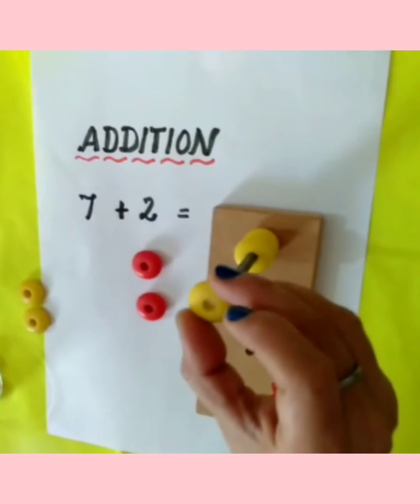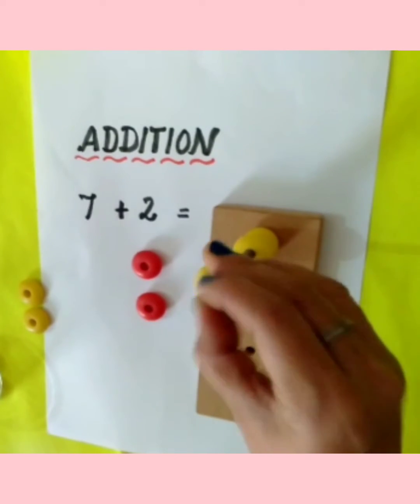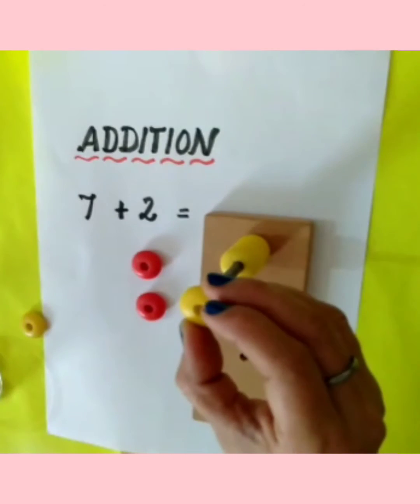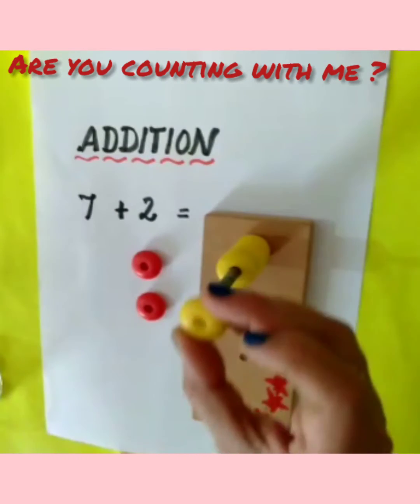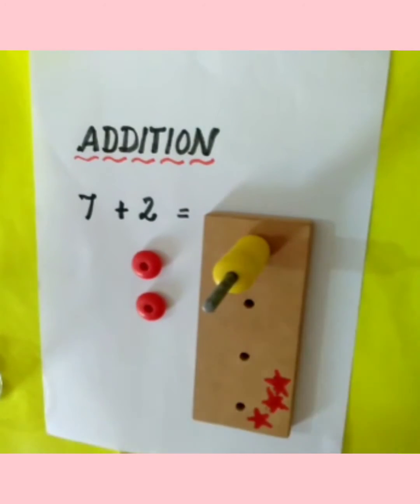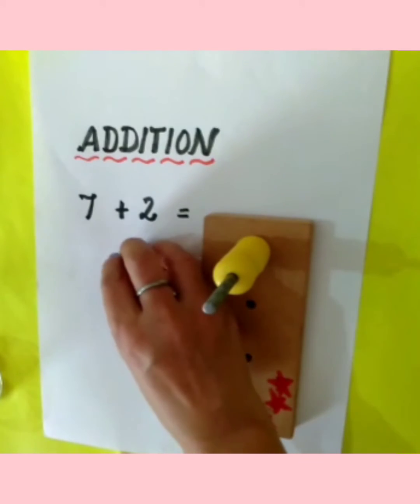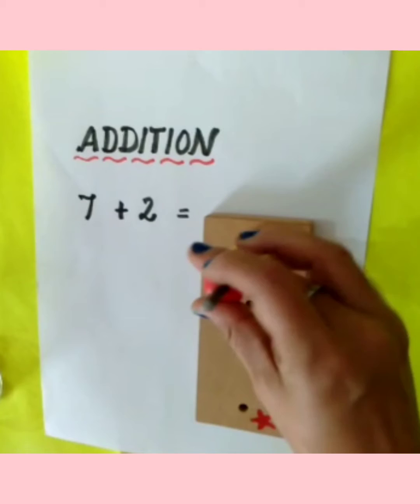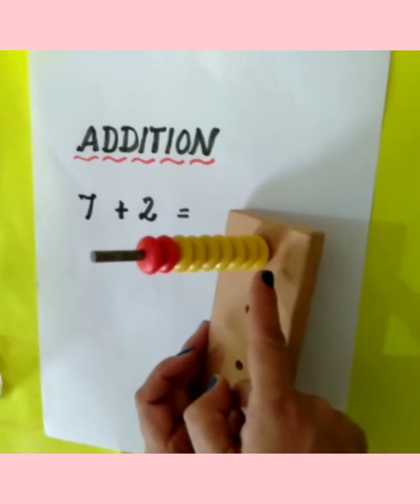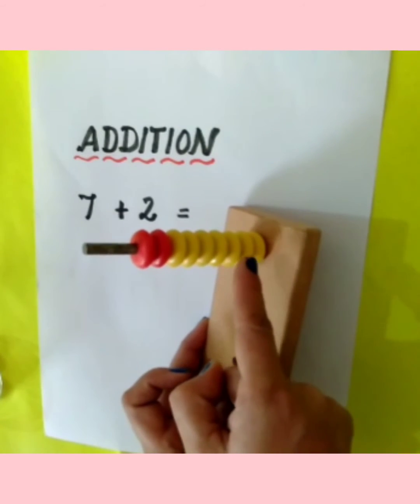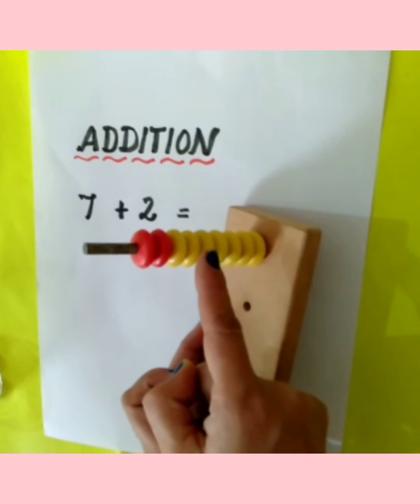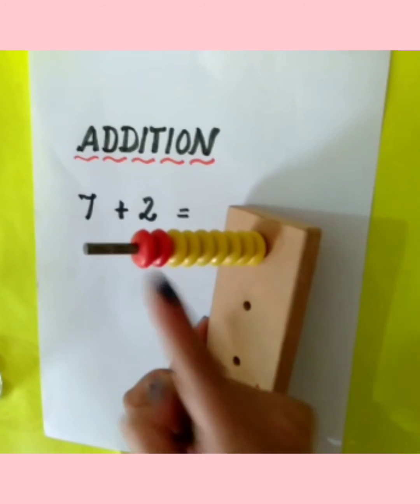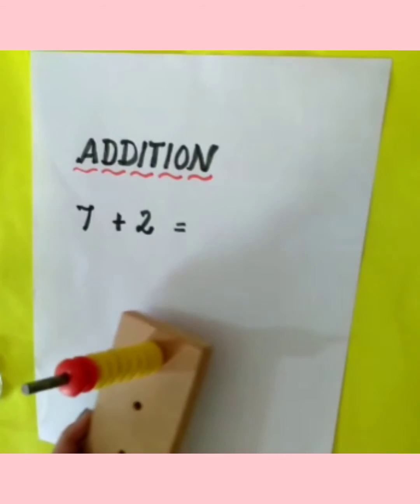Four, five - are you counting with me? - six and seven. And the second number is two. So let's count it all together: one, two, three, four, five, six, seven, eight, nine. Total nine beads we have.